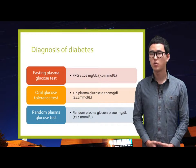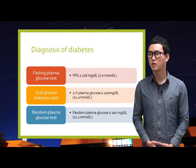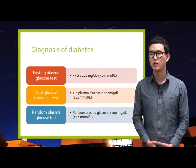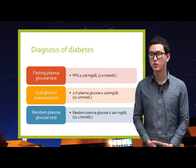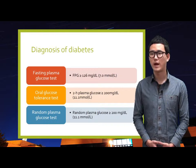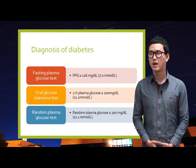An oral glucose tolerance test measures blood glucose after a person fasts at least 8 hours and 2 hours after the person drinks a glucose-containing beverage. This test can be used to diagnose diabetes and prediabetes.